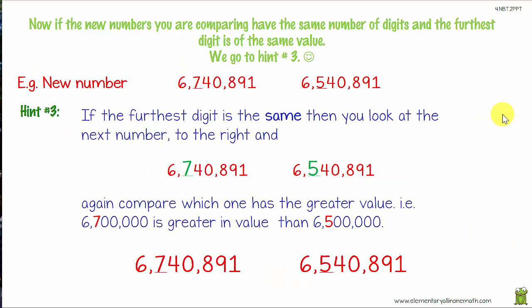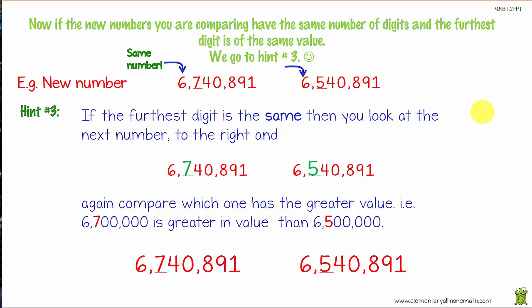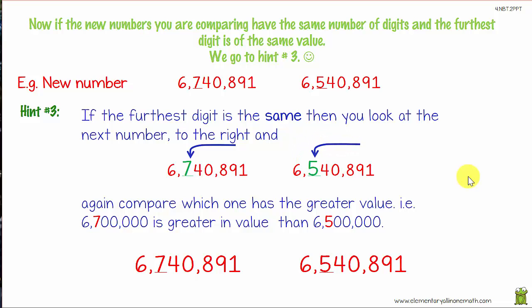Now if the numbers have the same number of digits and the furthest left digit is the same value — six and six, both in the six millions — then we go to hint number three. Hint three: if the furthest digit is the same, look at the next number to the right of it. We compare which one has the greater value. Six million seven hundred thousand is of greater value than six million five hundred thousand, so the symbol we use is greater than.